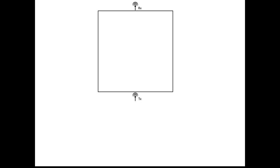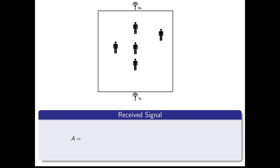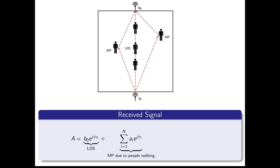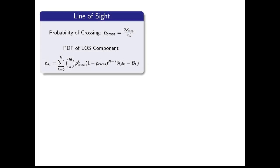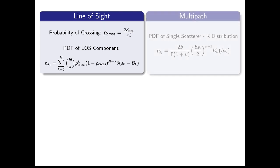Let's theoretically express the received signal when n people are in the area in terms of the line of sight and multipath effects. We also need to include the impact of static objects. Through a Markov chain modeling, we first characterize the line of sight impact.